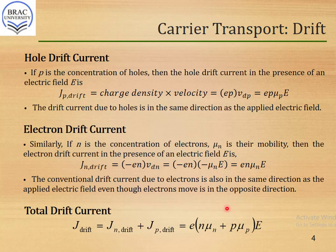So the total drift current density J_drift is the sum of drift current densities due to holes and electrons. Substituting the values of Jn_drift and Jp_drift, we reach the conclusion that J_drift equals e multiplied by (n·mu_n + p·mu_p) multiplied by the applied electric field E.